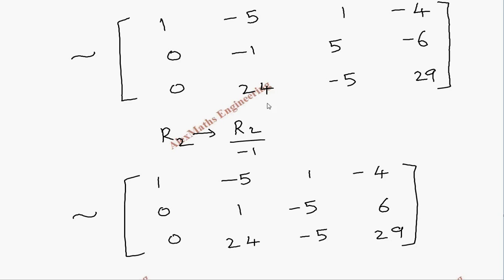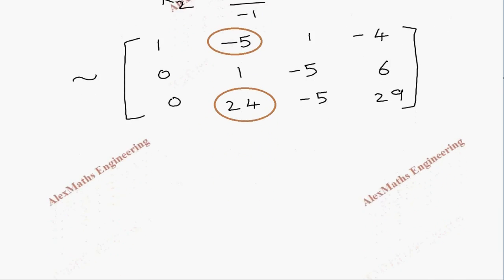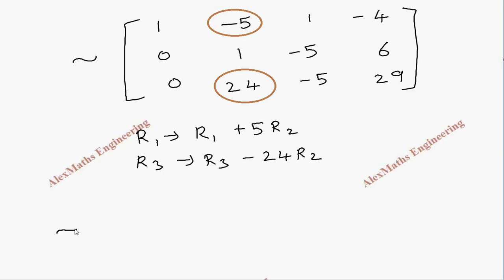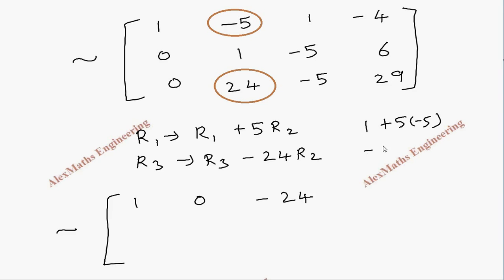Using the leading 1 in row 2, we make zeros above and below it in column 2. We apply R1 = R1 + 5×R2 and R3 = R3 - 24×R2. For R1: the x3 entry is 1 + 5×(-5) = -24, and the constant is -4 + 5×6 = 26, giving row 1 as [1, 0, -24 | 26].